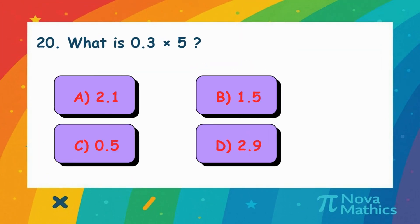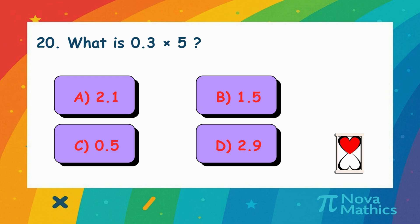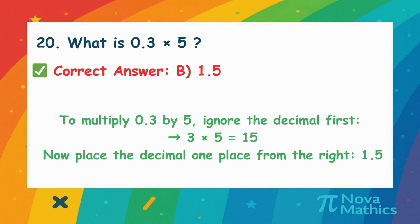19. What is 0.3 times 5? Let's multiply 0.3 by 5. First, think of it without the decimal. 3 times 5 is 15. Now put the decimal back one place. That's 1.5.